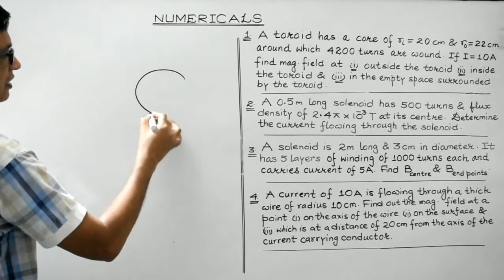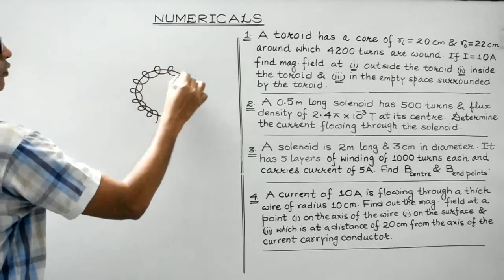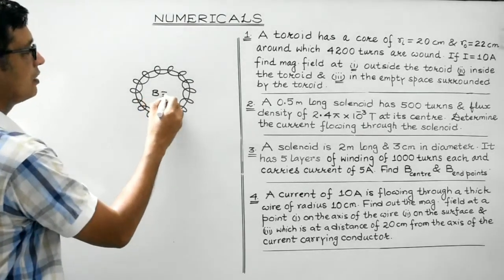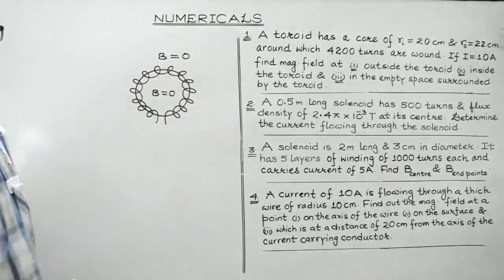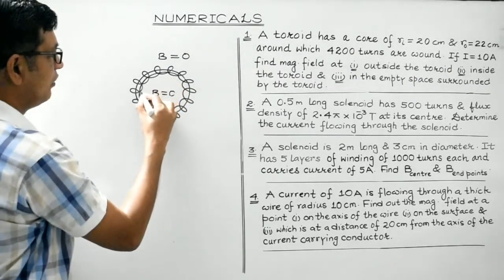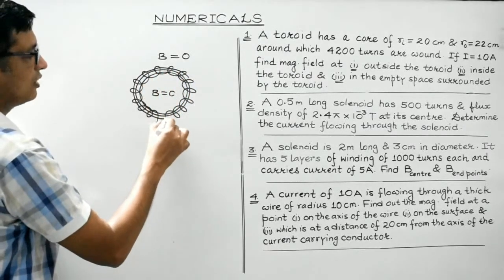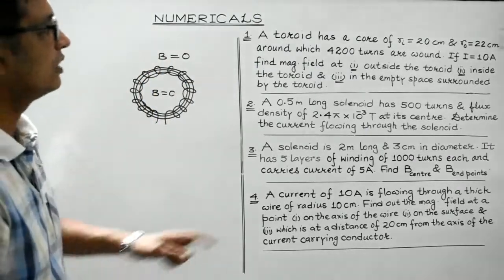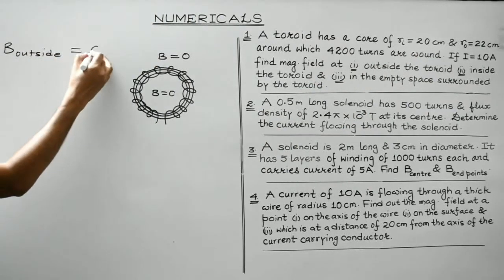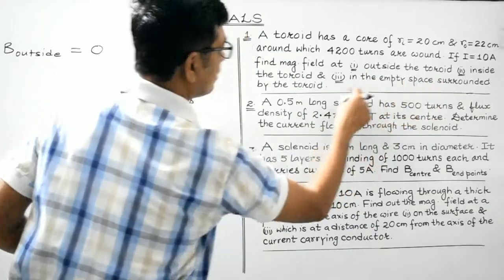A toroid means it's an anchor ring over which a number of turns of conducting wire is wound — this is known as a toroidal solenoid. Here we are aware the magnetic field is zero outside, and the magnetic field has remained confined within the solenoid. Magnetic field within the solenoid is almost parallel and constant. So outside the toroid, the magnetic field is zero.